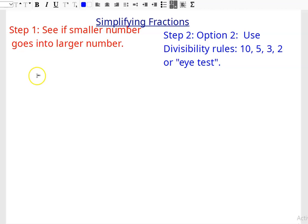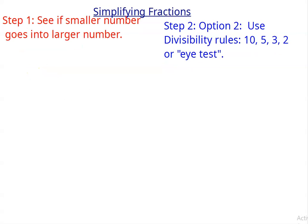So let's say I have the fraction 50 over 60. I listed the divisibility rules from greatest to smallest: 10, 5, 3, and 2. So the 10 rule says if the number ends in a 0, then it's divisible by 10. So for simplifying fractions, they would both have to be true.